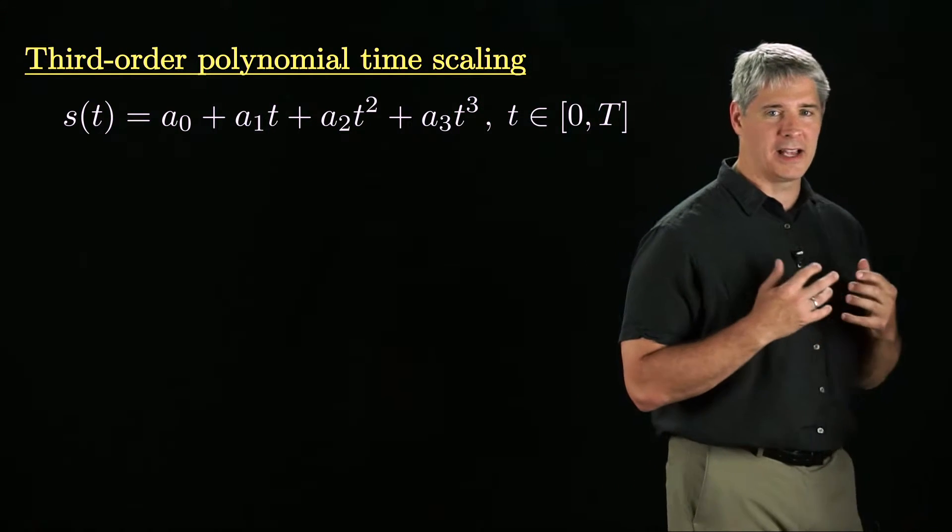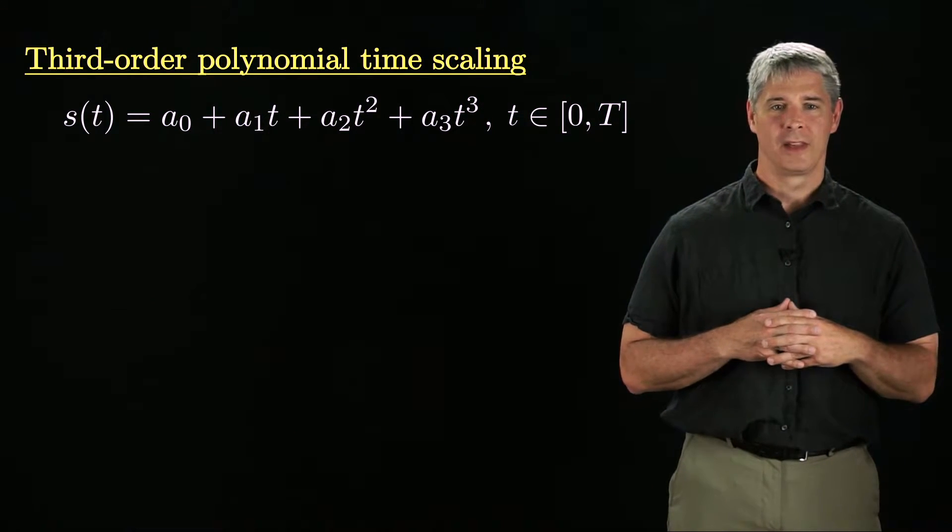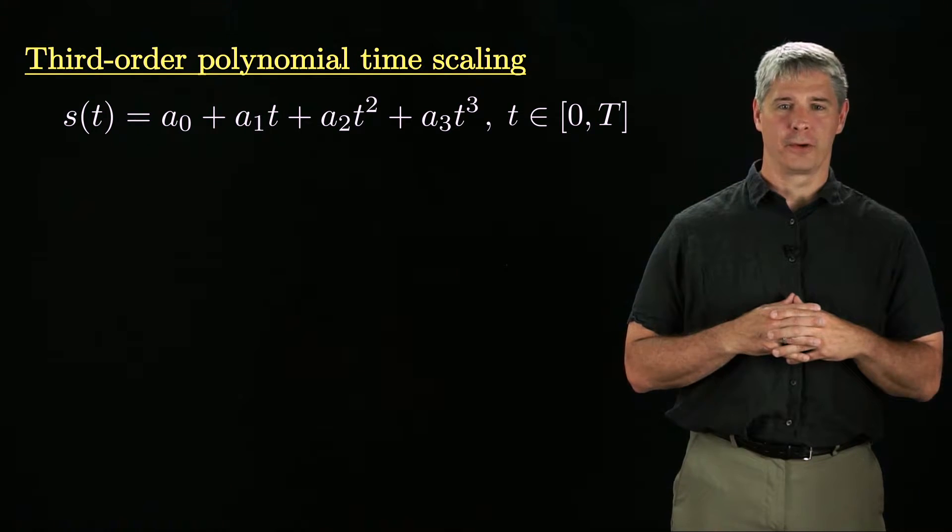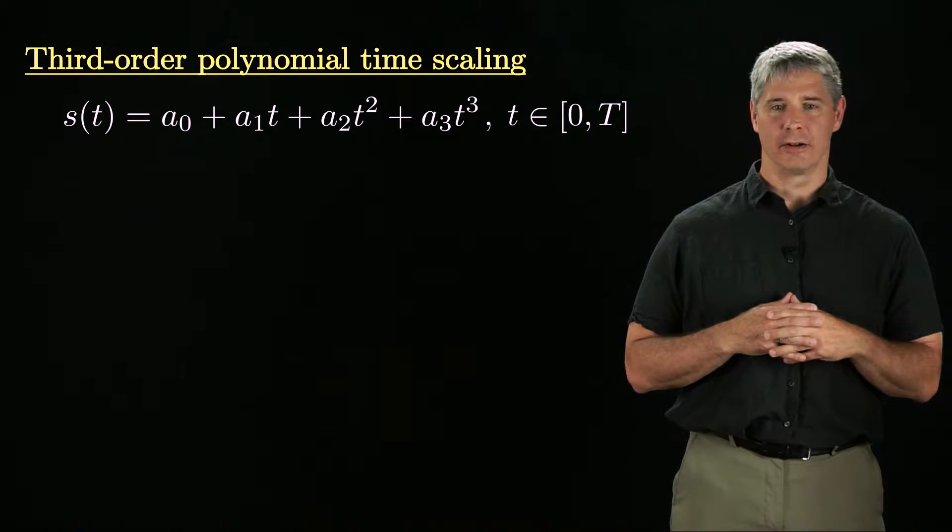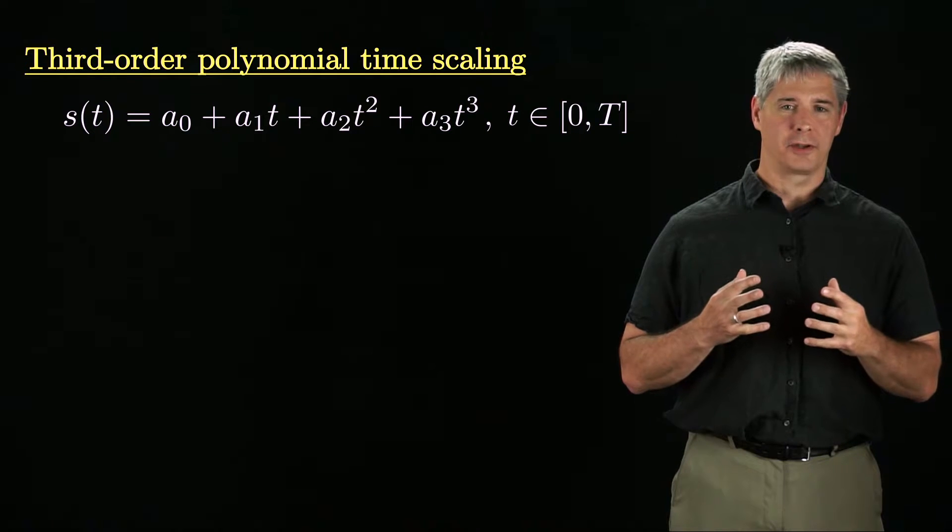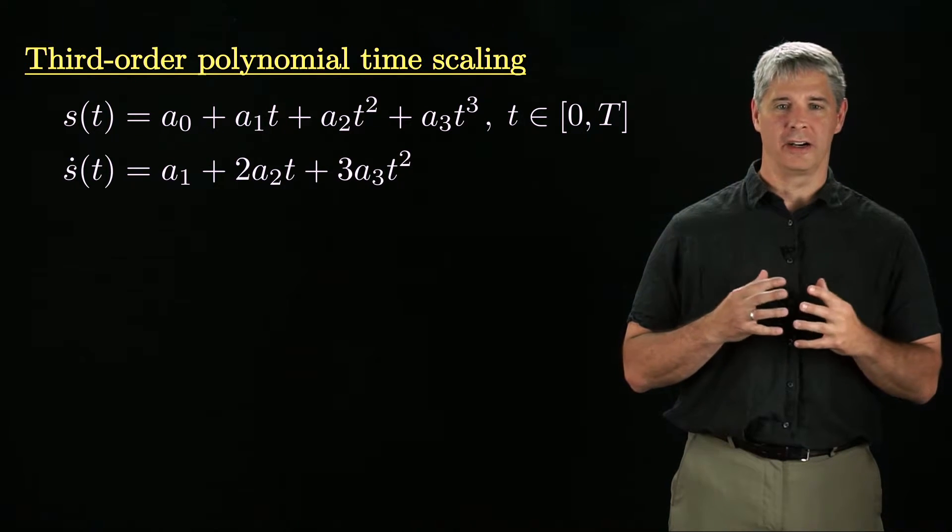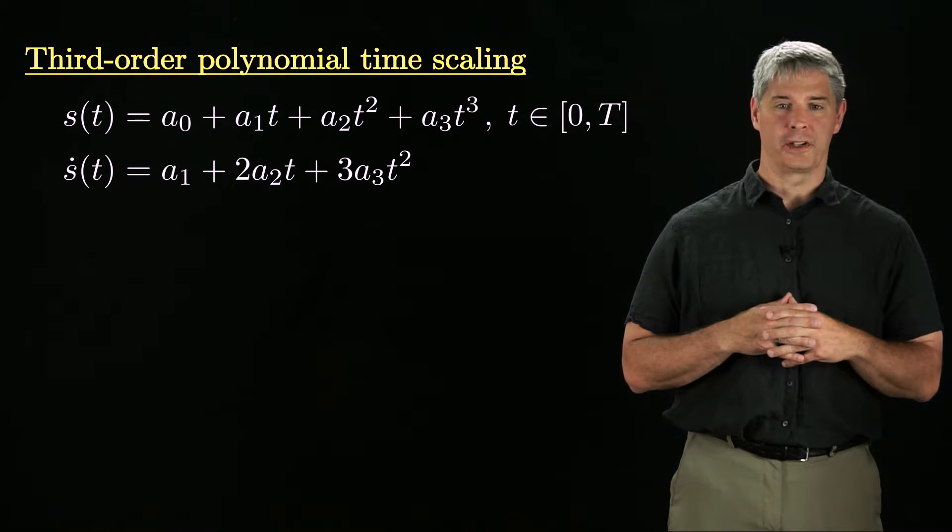One simple time scaling is a third-order polynomial time scaling, where s is a cubic function of time. The time scaling is defined by the four coefficients of time, a0 through a3. The time derivative of the time scaling is shown here.